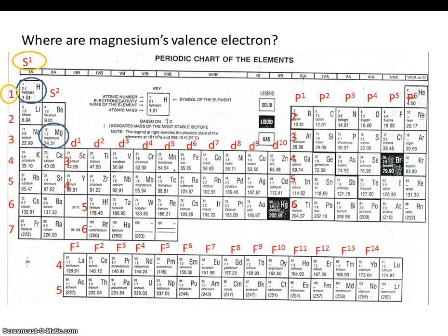Recall that valence electrons are electrons in the outermost energy level. Magnesium is located in period 3 and in the S block. So magnesium's valence electrons are in 3S, the third energy level in the S sublevel.